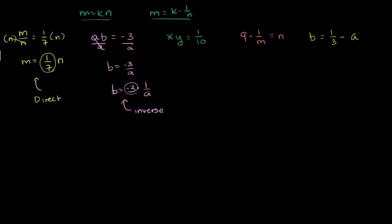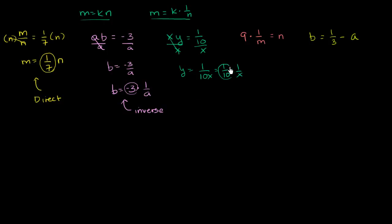xy is equal to 1/10. Let's try to separate the variables, isolate them on either side of the equation. Let's divide both sides by x. You get y equals 1/10 over x, which is the same thing as 1 over 10x, which is the same thing as 1/10 times 1 over x. So y equals some constant times 1 over x — once again, this is an inverse variation. y and x vary inversely.